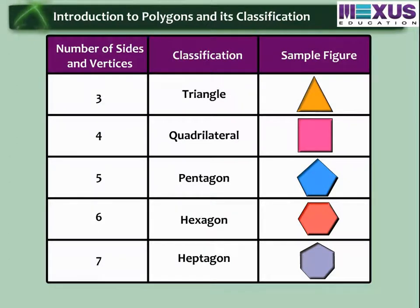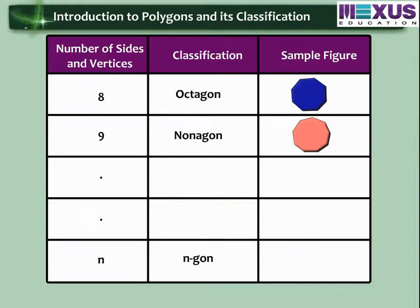Let us see the classification of polygons in this table. We see that when number of sides or vertices is equal to three, it is named as triangle. When number of sides or vertices is equal to four, it is named as quadrilateral. For five, it is named as pentagon. For six, it is named as hexagon and so on. For n number of sides or vertices, it is named as n-gon.